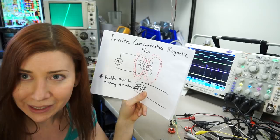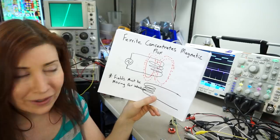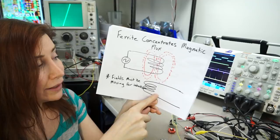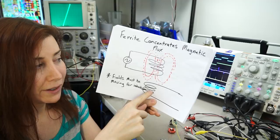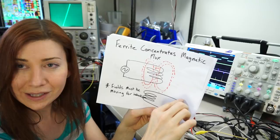Alright, so the two properties that we have to keep in mind through the rest of this video is that ferrites concentrate magnetic flux. So if we have a transformer with a primary and secondary that just has air between them, there's going to be very little coupling between the primary and secondary. But if we put a ferrite or some kind of core material in there, that'll concentrate these magnetic flux lines and induce more current into the secondary.